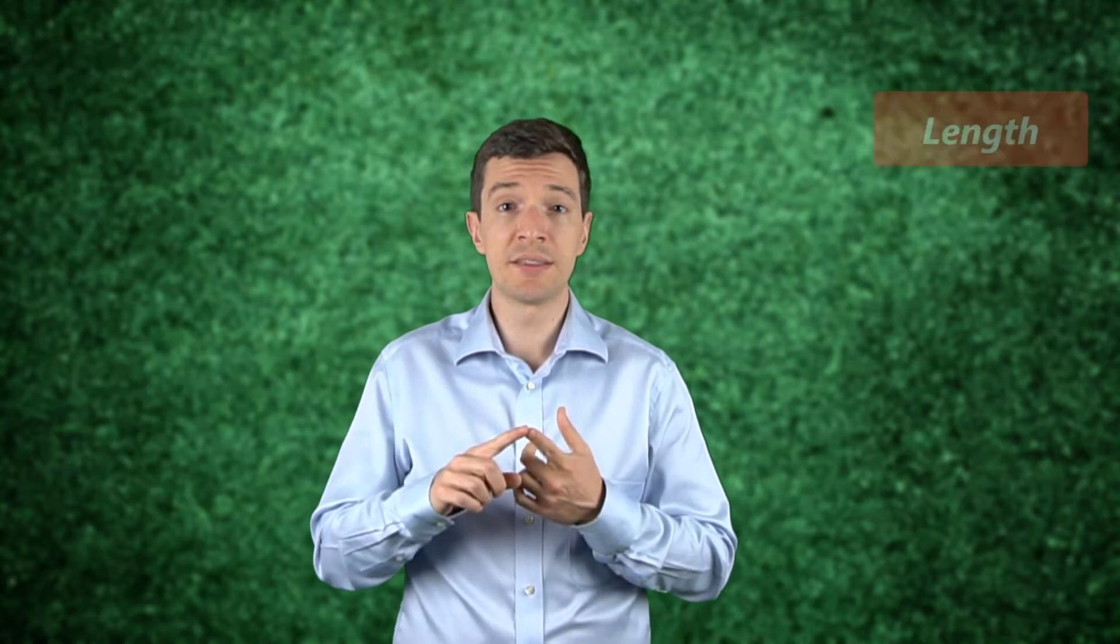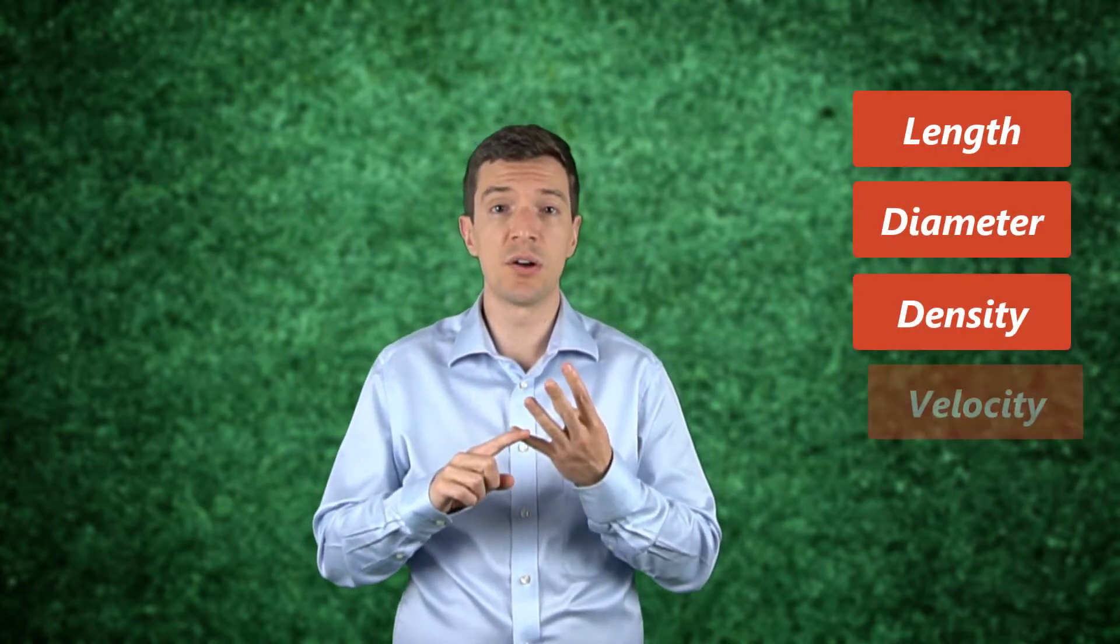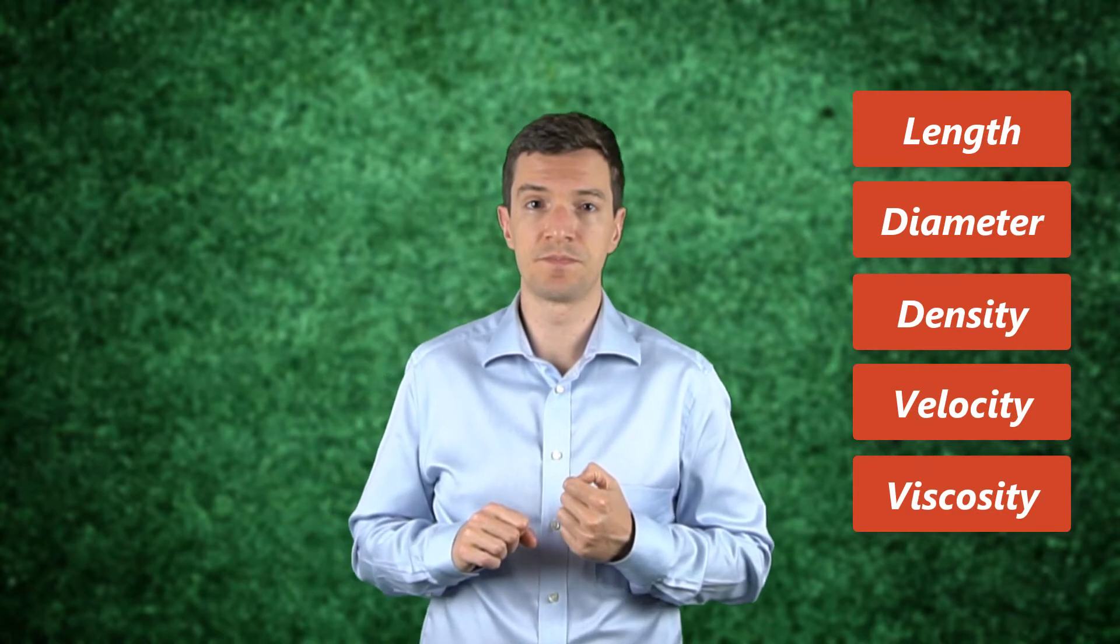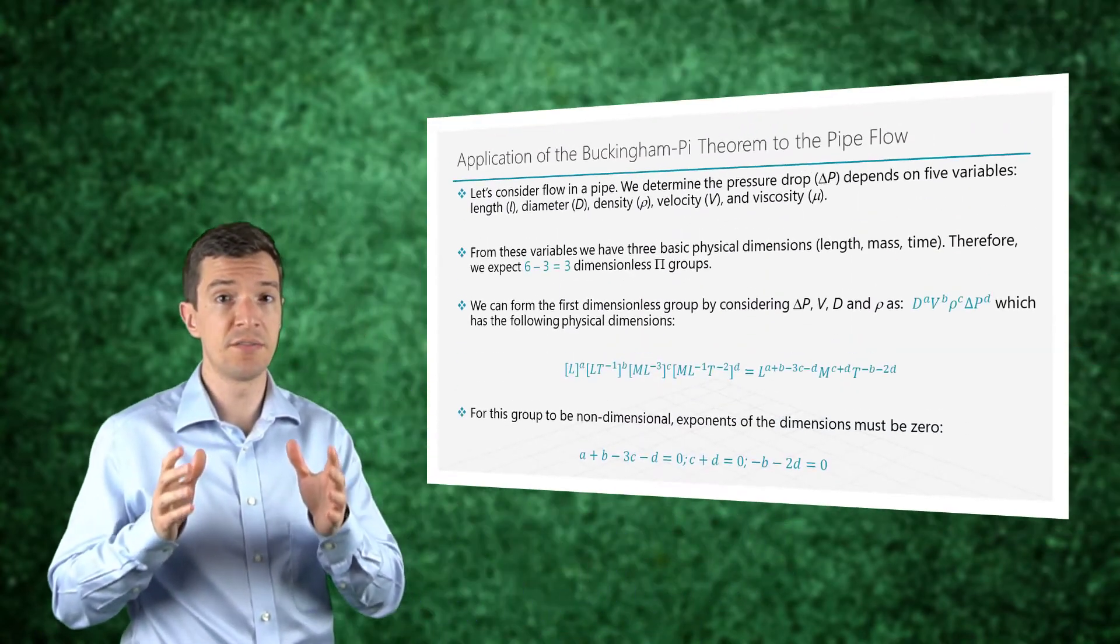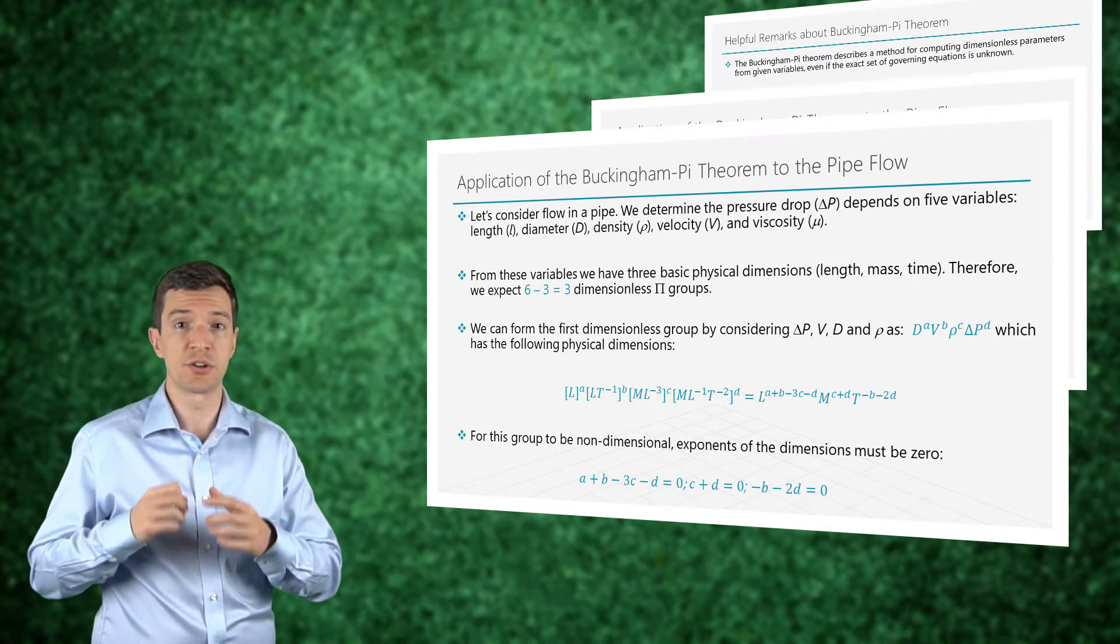Let's get a better understanding of this theorem applying it to a common case. So let's consider a flow in a pipe. The pressure drop along the pipe depends on five variables: length, diameter, density, velocity and viscosity. So we have a total of six physical variables, including the pressure drop.